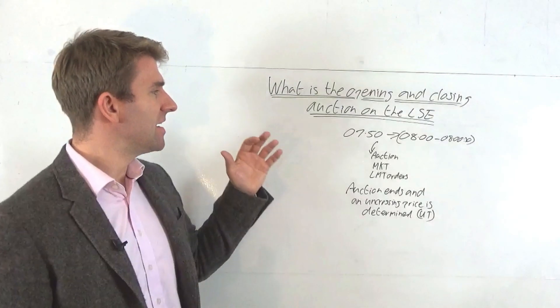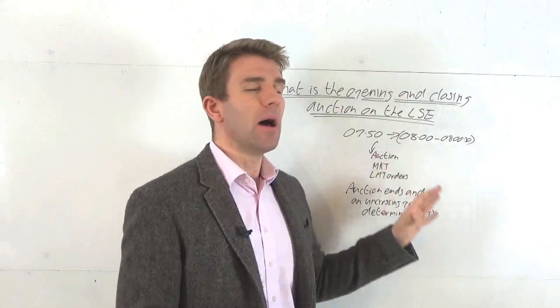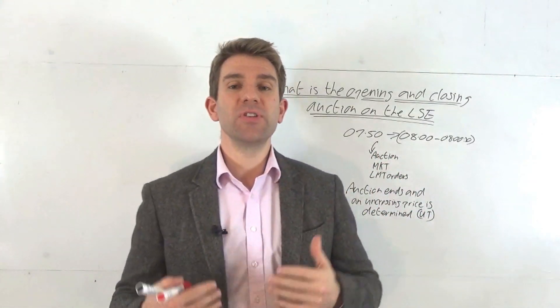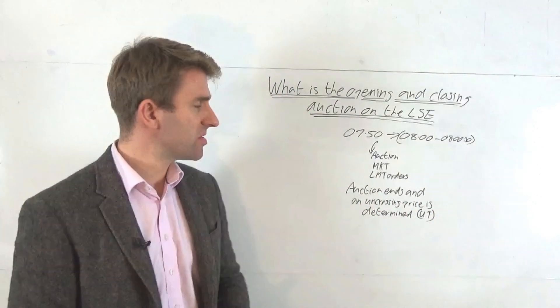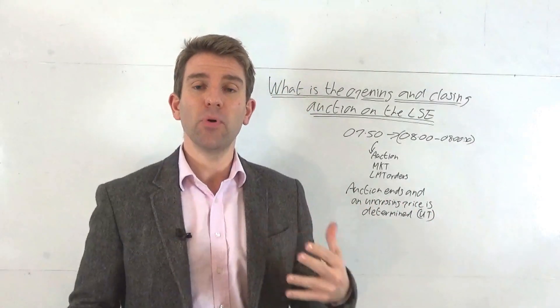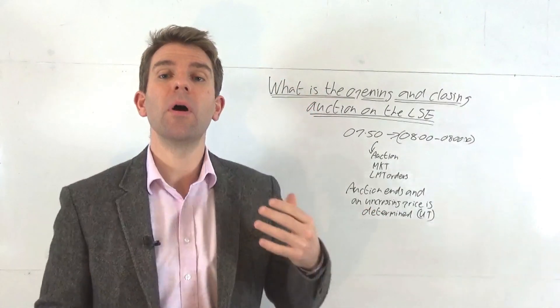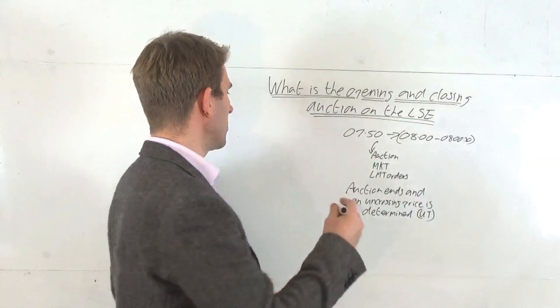At 7:50 AM UK time, people can start posting their orders for the auction. The auction process starts, and people can put in limit orders - limit buy orders, limit sell orders - or market orders, and they get shown in the order book.